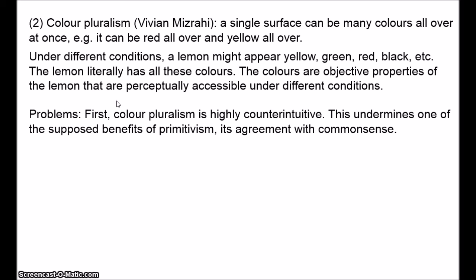So colour pluralism does solve one of the main problems that primitivism faces, but there are a number of worries. First, the notion that an object can be two or more colours all over at once is highly counterintuitive — this sounds more like something you'd expect in quantum mechanics. Everyday statements like 'if an object is red all over, then it's not yellow all over' seem obviously true — a basic fact about the nature of colours. But colour pluralism denies this, and in doing so it undermines one of the purported benefits of primitivism, which is its agreement with common sense. Primitivism captures the common sense view that colours are properties of objects and the immediate phenomenology of colours, and the claim to capture common sense looks a lot weaker if the primitivist is forced to accept colour pluralism.